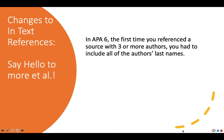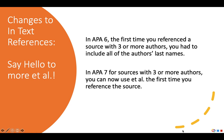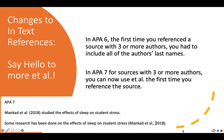In APA 7, this has changed. For sources with 3 or more authors, you can use et al. from your very first in-text citation. This means that in your in-text citation, you should never have more than 2 authors listed. If your source has 3 or more authors, you can immediately use only the lead author's last name followed by et al. So in my APA 7 example, from my very first reference, I'm using Mon-Cod et al., rather than listing all of the authors.